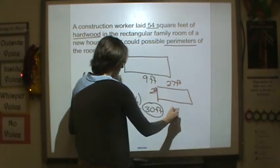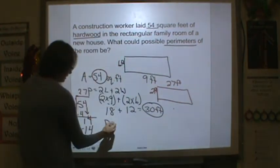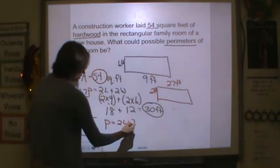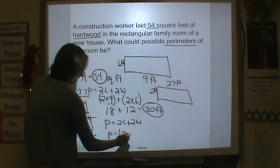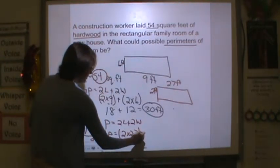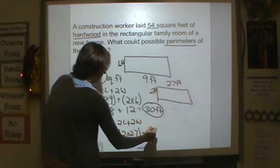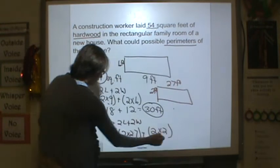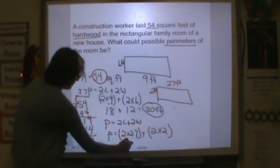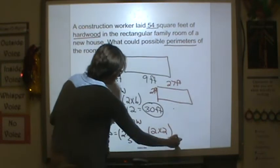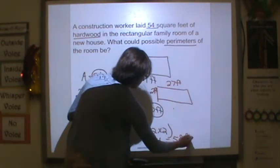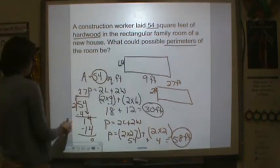Now let's find the perimeter. So remember, perimeter is equal to 2L plus 2W. Perimeter is equal to my L is 27, plus my W is 2. So 27 times 2, I already know that's 54, plus 4, is equal to 58 feet. So that's another possible perimeter.